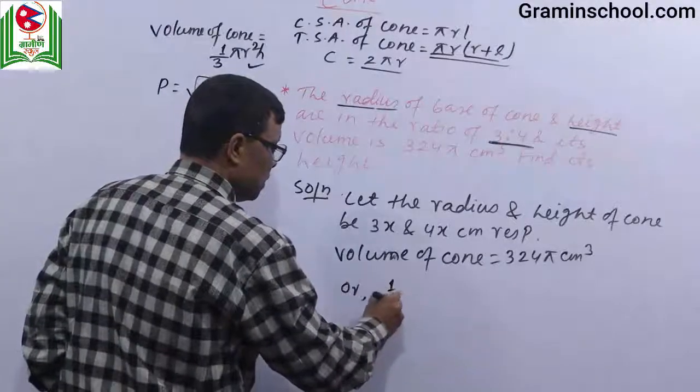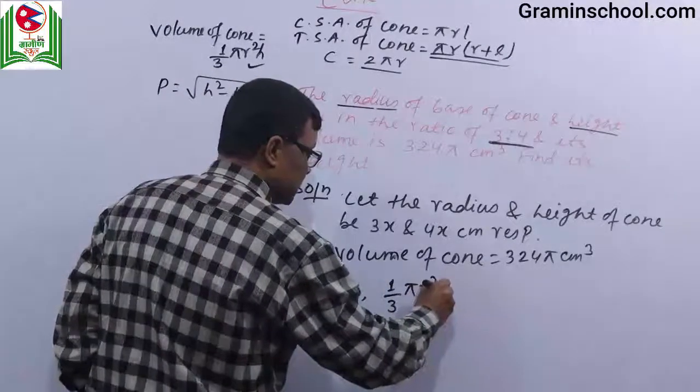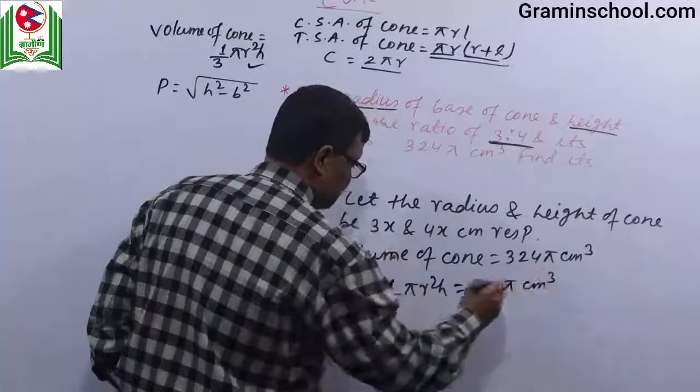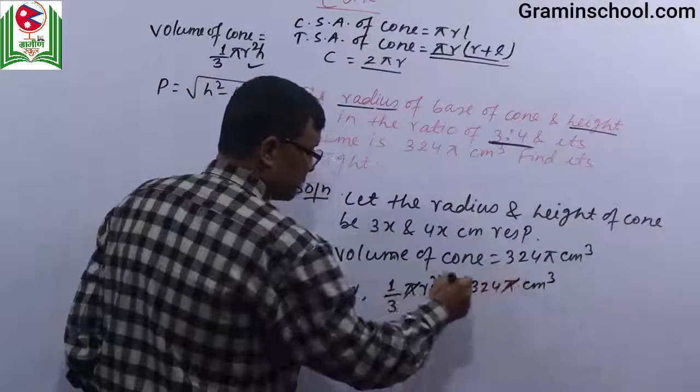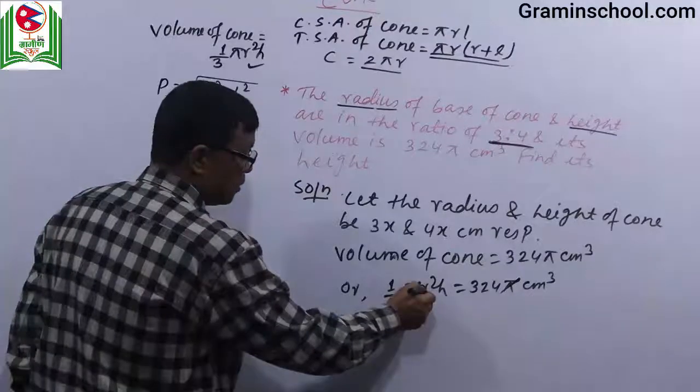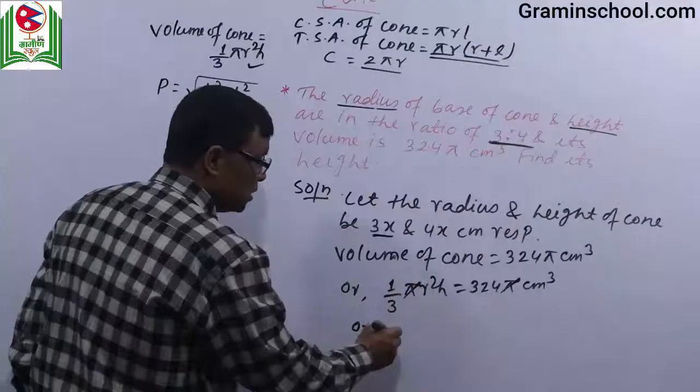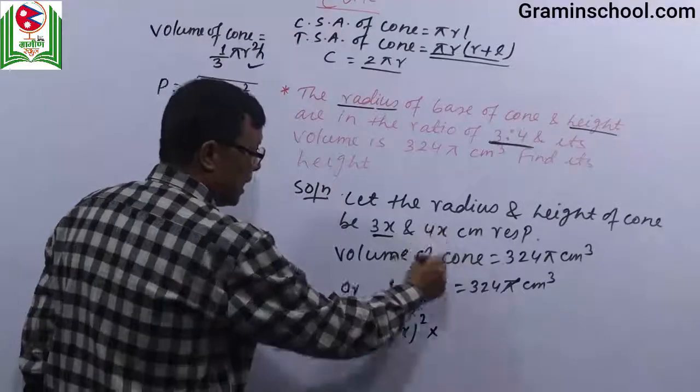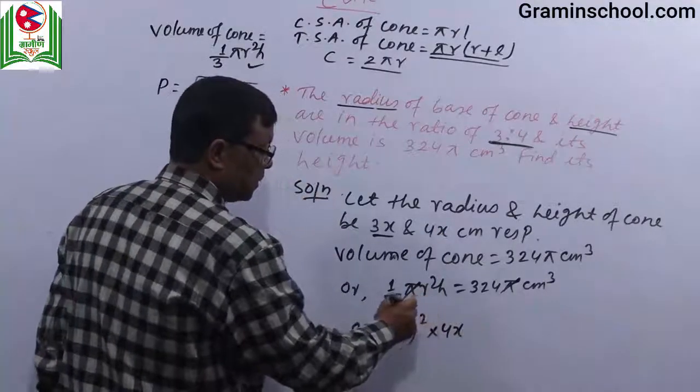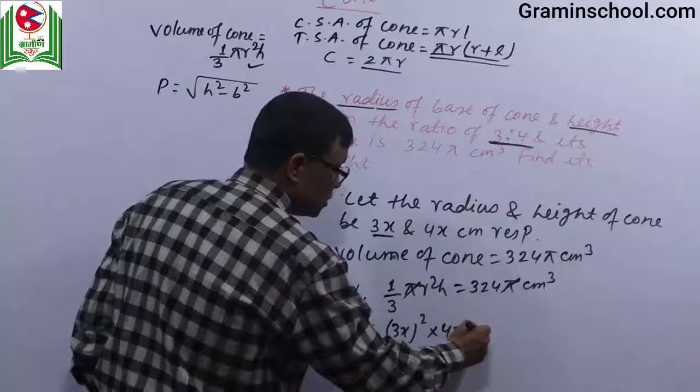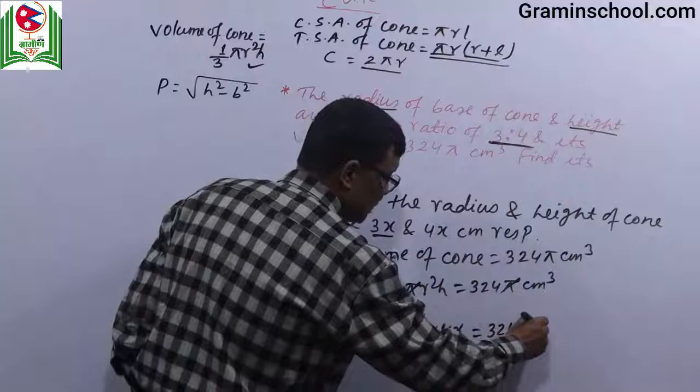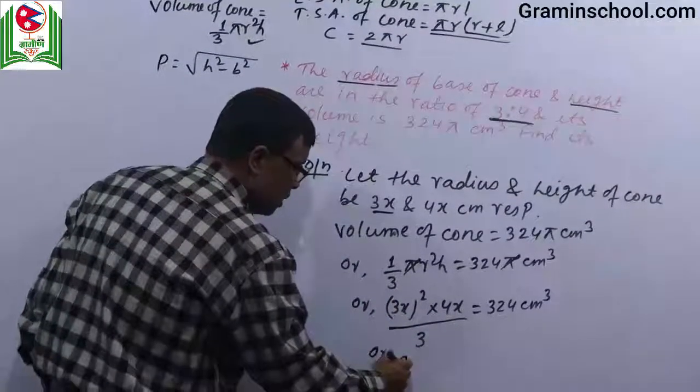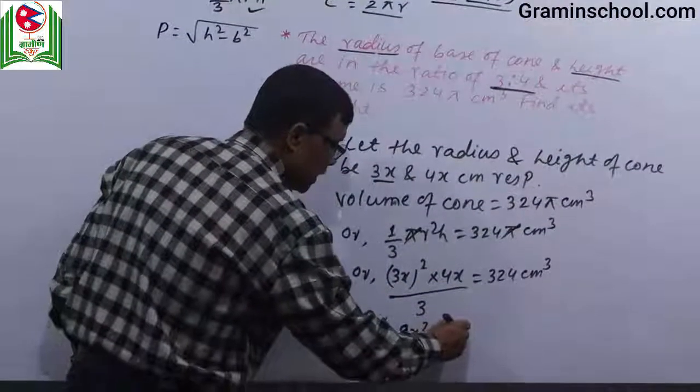One by three pi r square h is equal to 324 pi cubic centimeter. Now pi cancels with pi. Substituting r equals 3x, we get 3x squared.